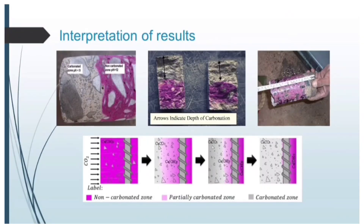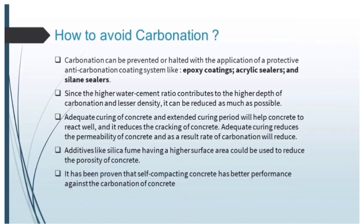The demarcation between the region which turns magenta or dark pink and the region showing no color change indicates the carbonation front. The depth is measured on the exposed surface. According to the standard procedure, a minimum of three specimens shall be taken from each structural member and the mean depth of carbonation shall be calculated and recorded.